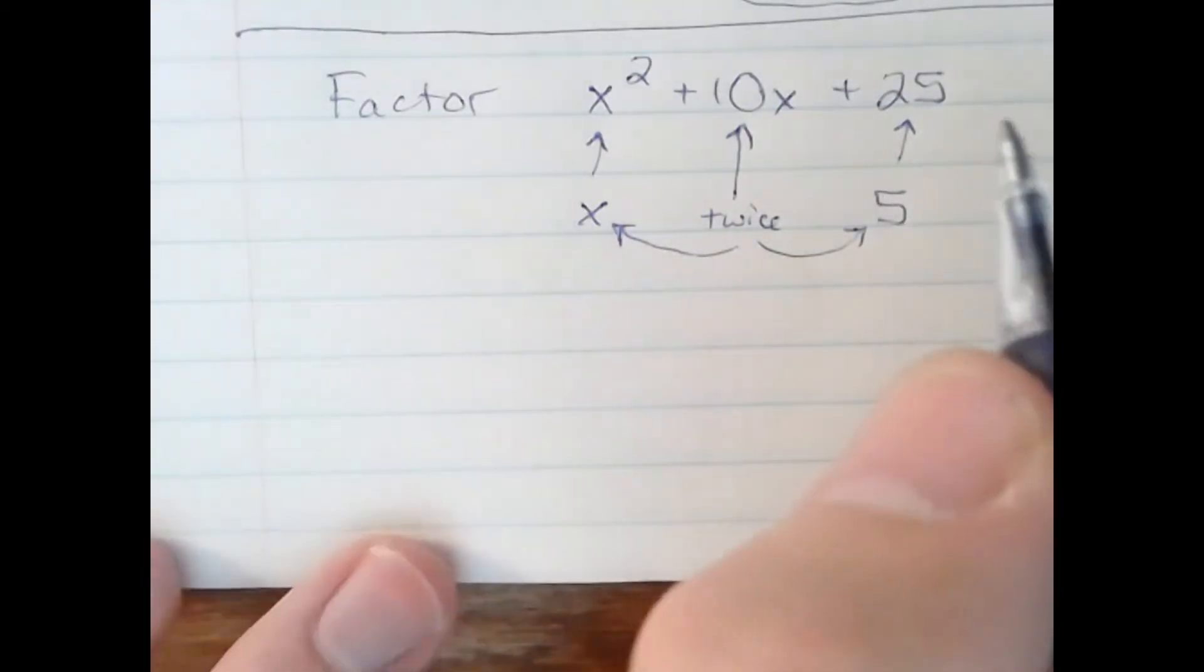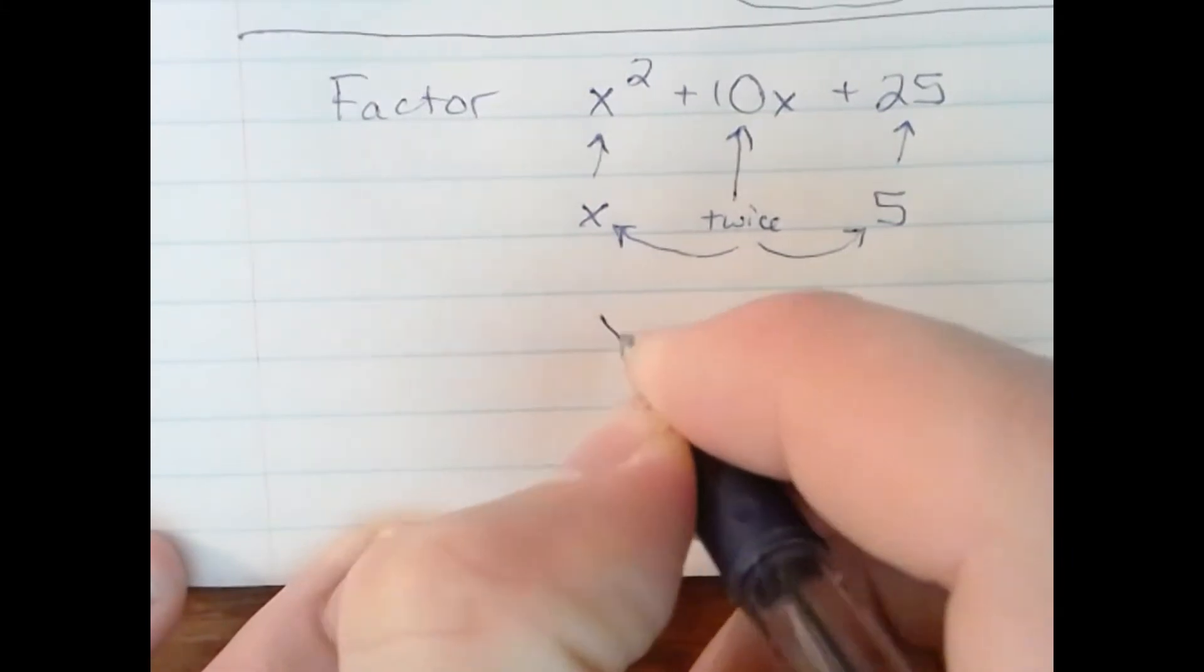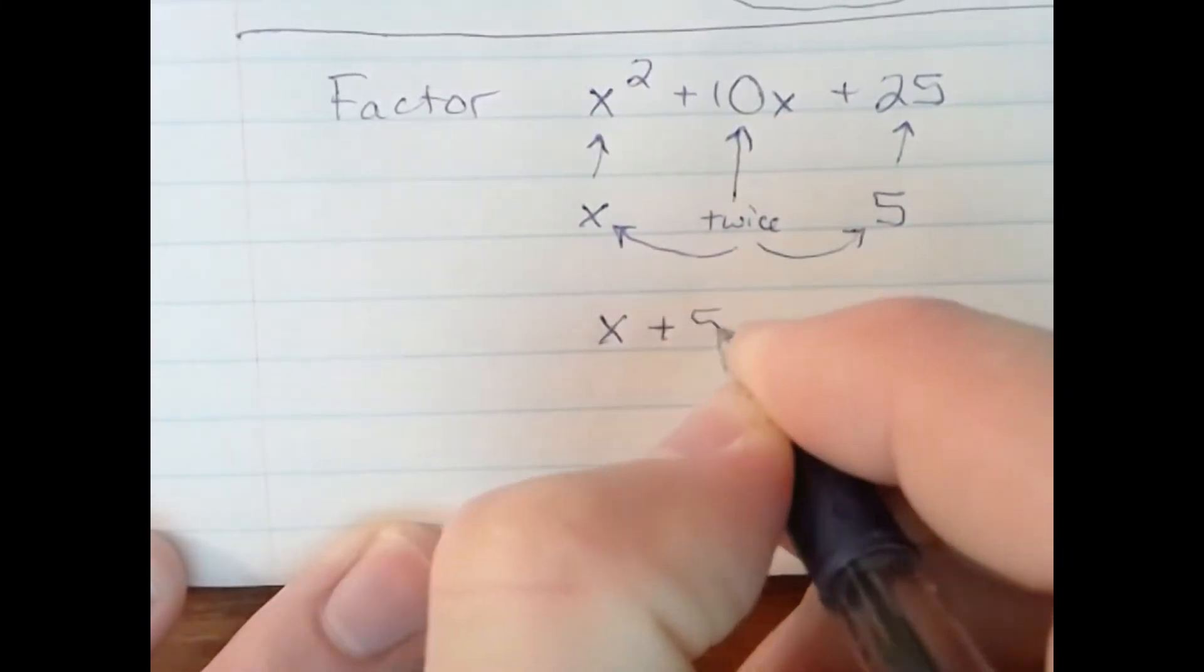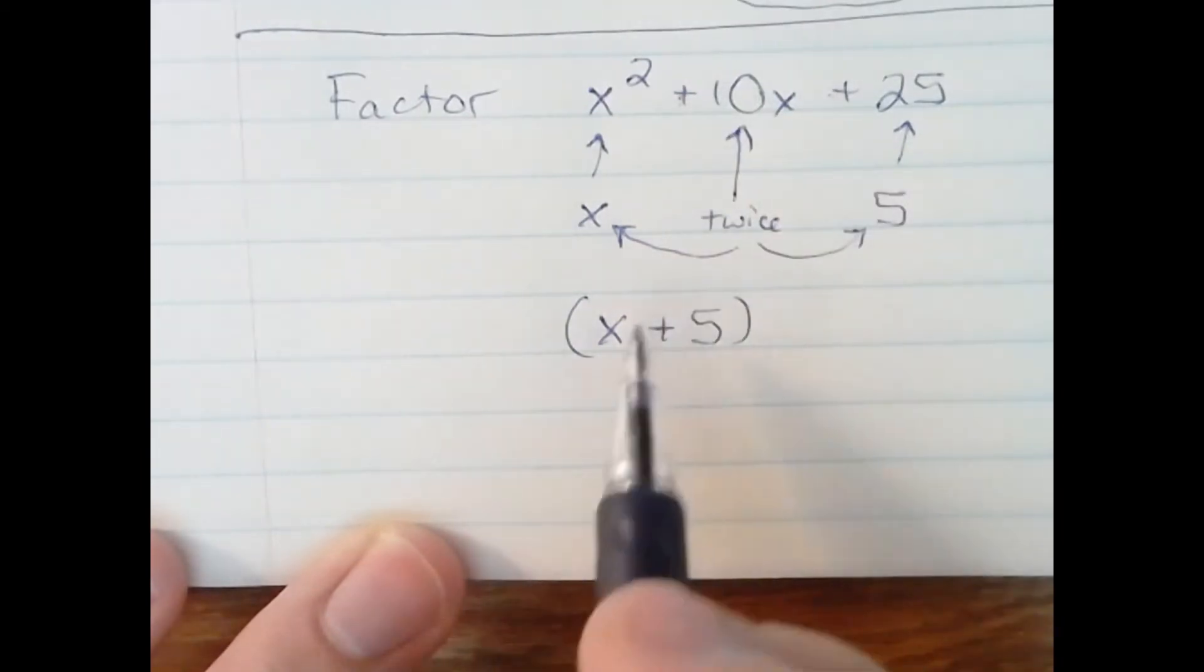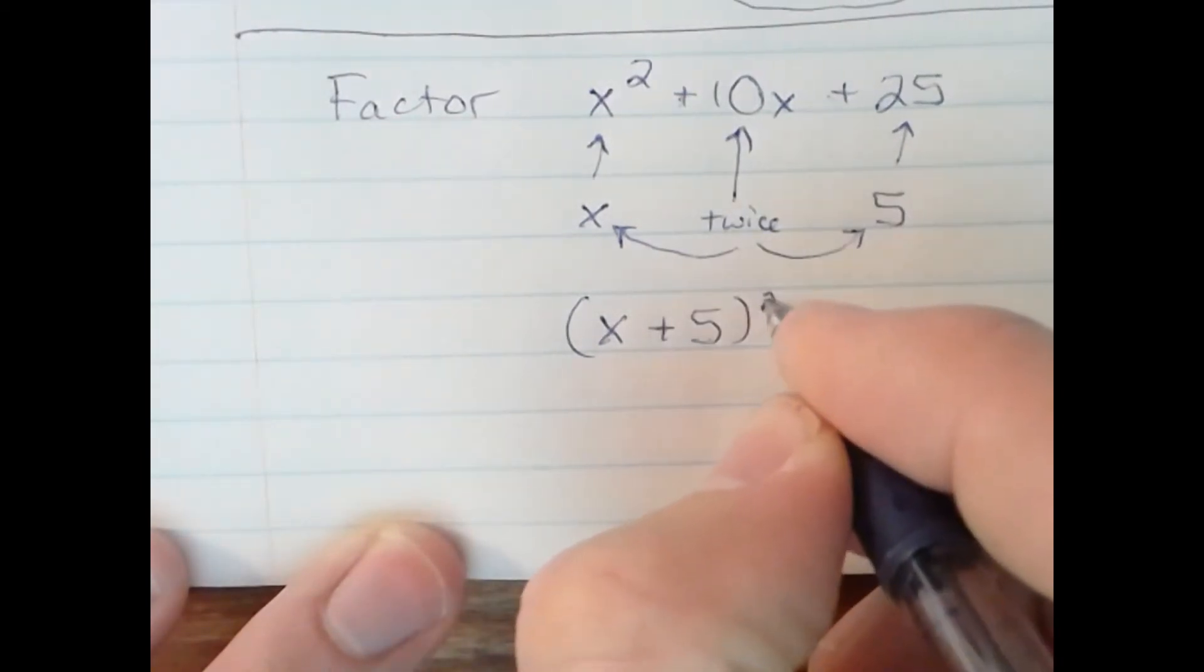If that's the case, all we need to do is take the sum, since we have plus and plus here, of the quantity x plus 5 and square it.